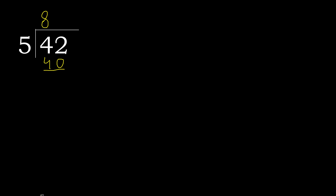42 minus 40 is 2. That is not a number, therefore complete — always complete with 0. Here with point, 0 point.